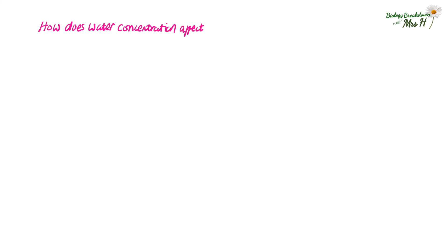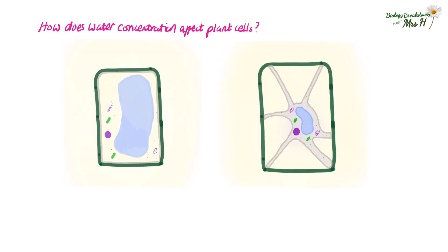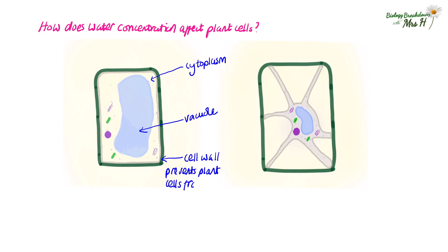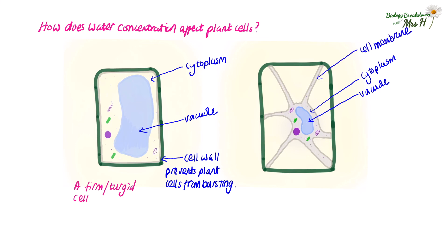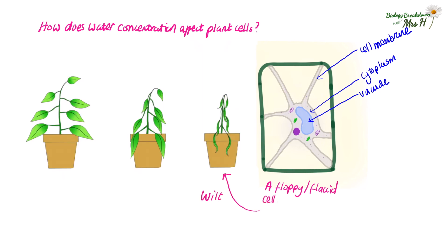How does water concentration affect plant cells — actual real plant cells? In a plant cell, water is contained in the cytoplasm and the vacuole, and there'll be solutes inside the cell so the water concentration will be varied. If more water enters the cell it wouldn't burst because of the cell wall, so a cell with plenty of water will be firm and turgid, which helps keep the plant upright. Water is also needed for chemical reactions including photosynthesis. If a plant cell loses too much water, the vacuole becomes small and the cell membrane shrinks away from the cell wall, making the cell flaccid, causing the plant to wilt, and if it doesn't get water soon it could die.